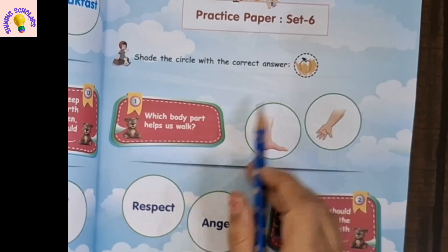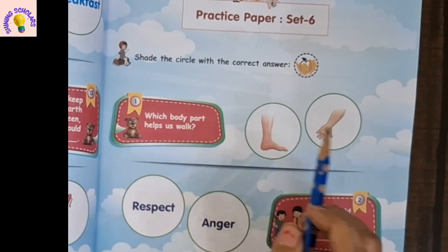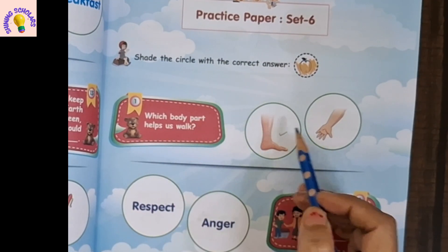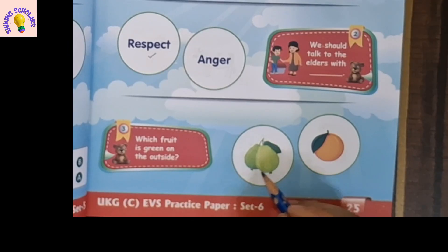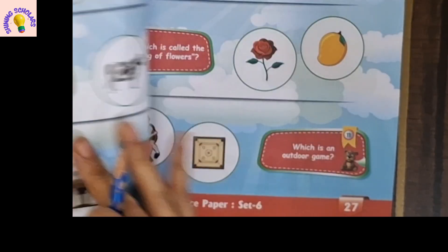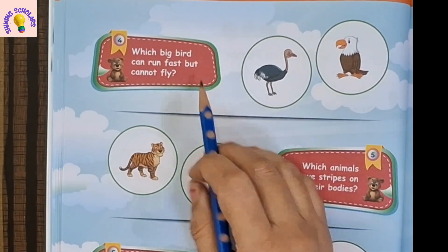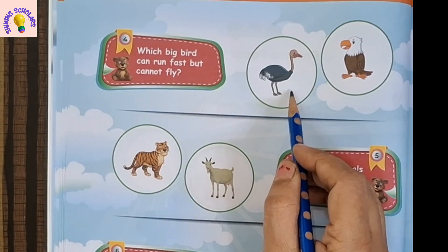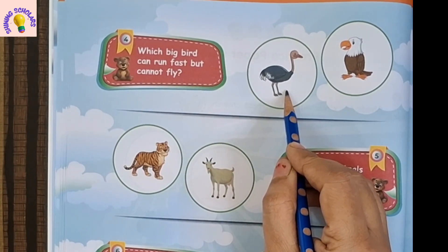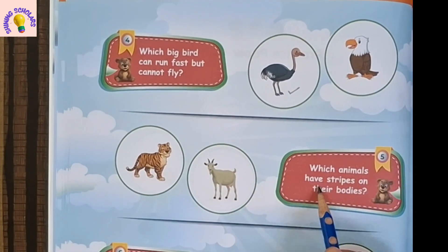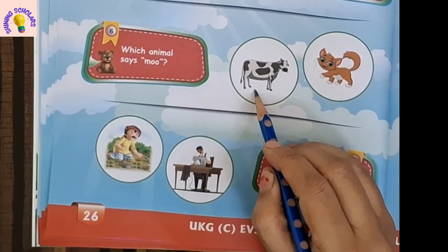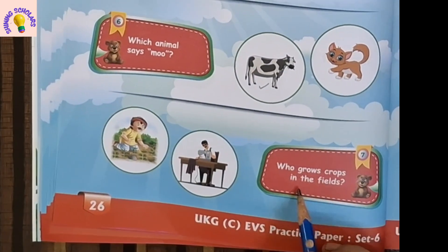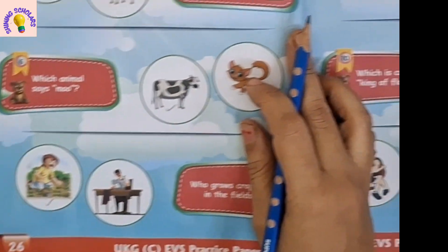Set 6. Shade the correct answer. Which body part helps us work? That is the leg and the foot. We should talk to elders with respect. Which fruit is green on the outside? It's guava. Which big bird can run fast but cannot fly? Ostrich — it can run fast but cannot fly. Which animals have stripes on their bodies? It's tiger. Which animal says moo? Cow says moo. Who grows crops in the field? Farmer grows crops in the field.